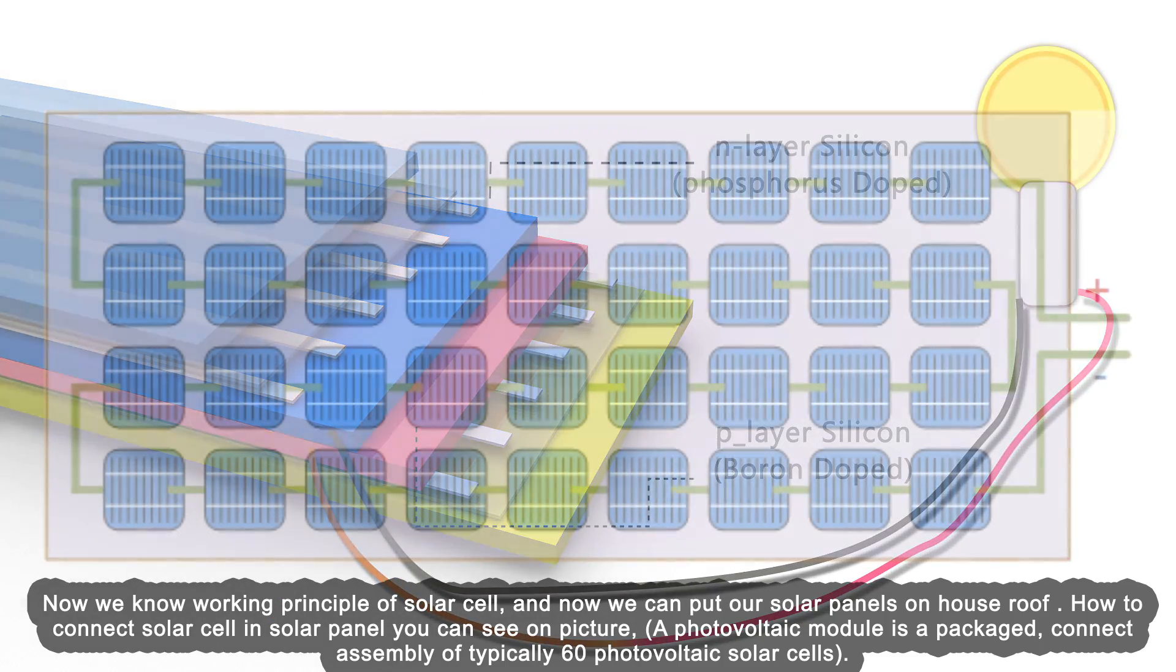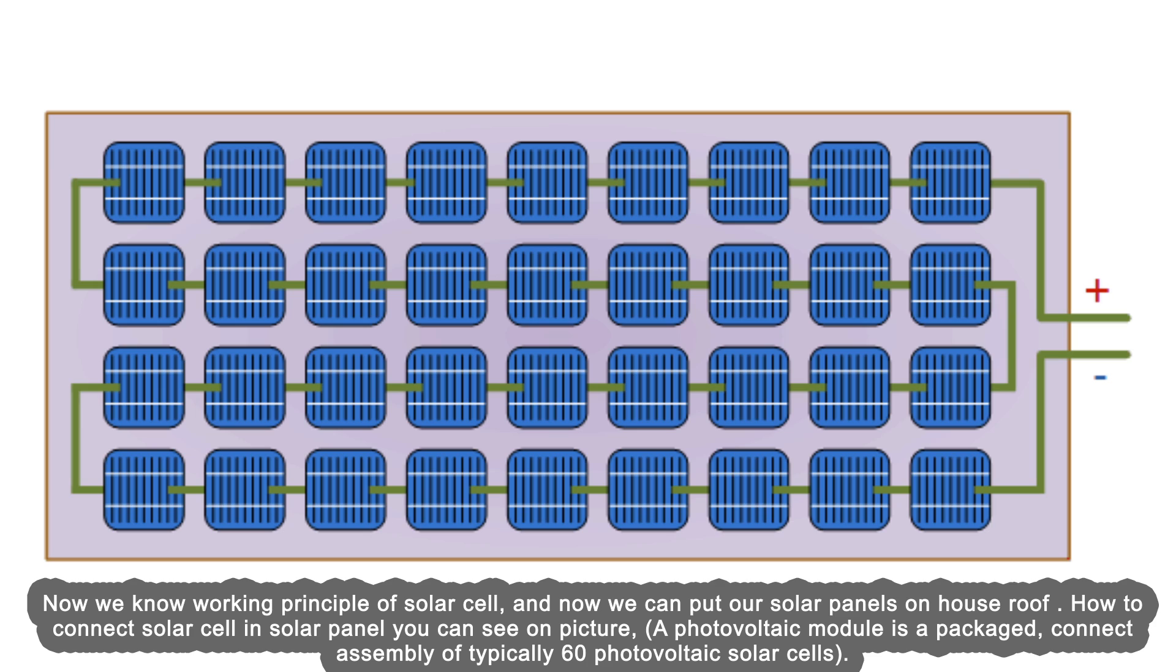Now we know the working principle of solar cells, and we can put our solar panels on a house roof. How to connect solar cells in a solar panel you can see in the picture. A photovoltaic module is a packaged connected assembly of typically 60 photovoltaic solar cells.